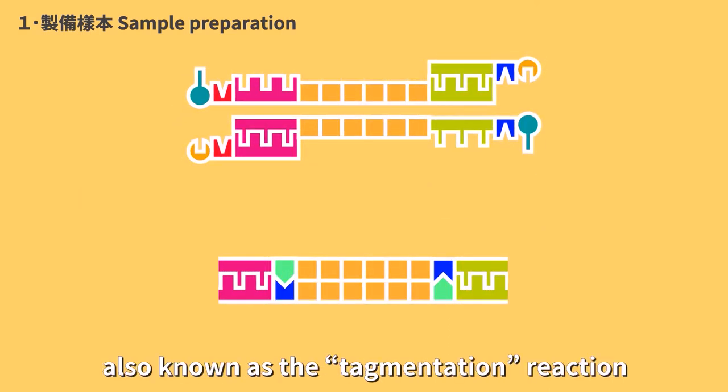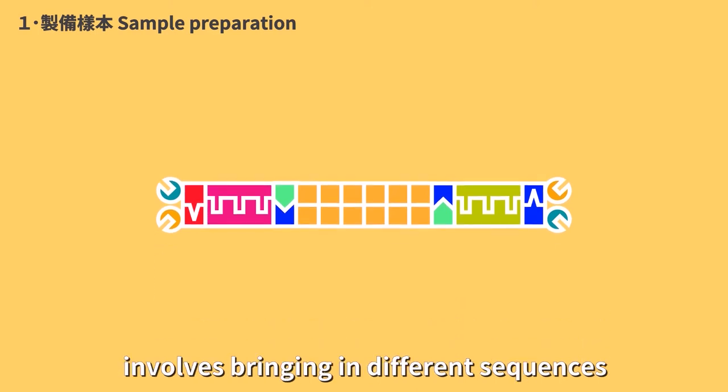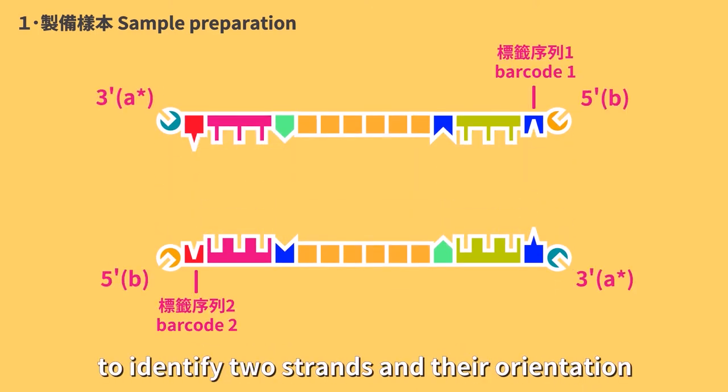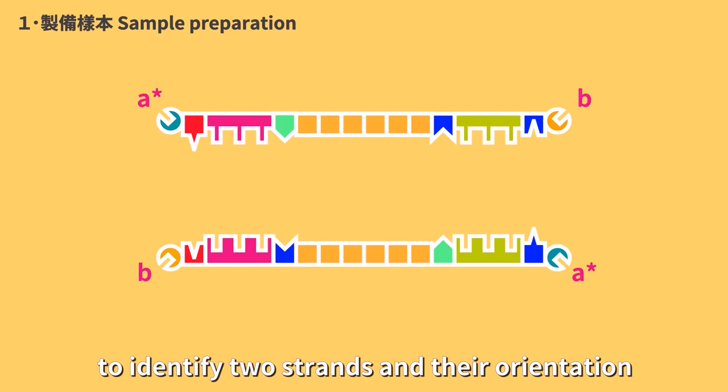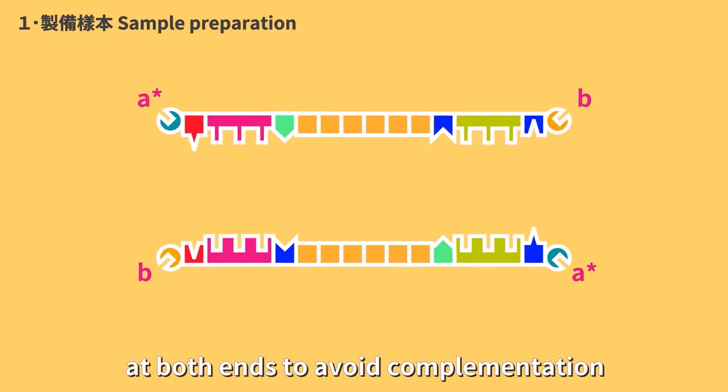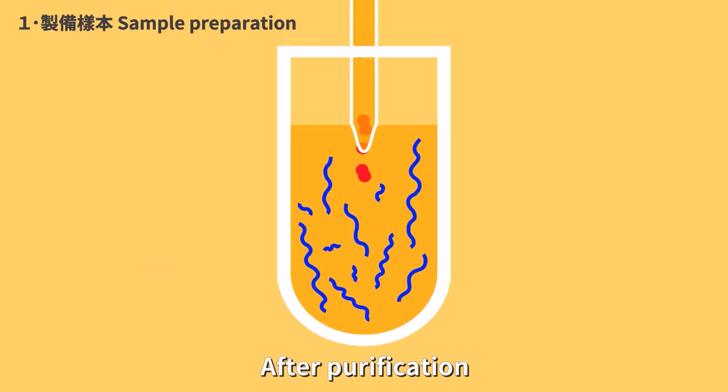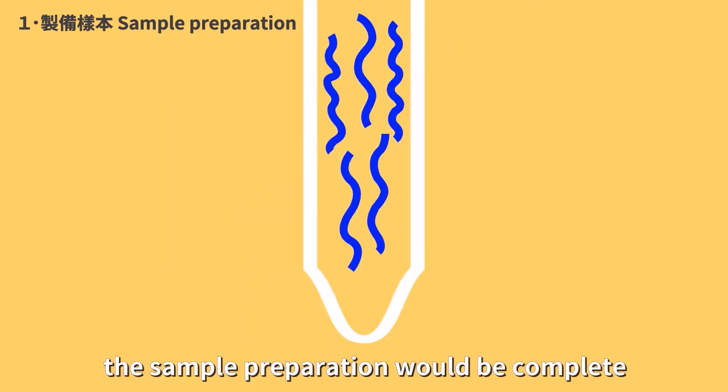This process, also known as the tagmentation reaction, involves bringing in different sequences at both ends of short segments to identify two strands in their orientation, and constructing fork-like structures at both ends to avoid complementation and re-ligation. It aids subsequent amplification and sequencing reactions. After purification, the sample preparation will be complete.